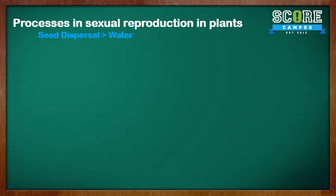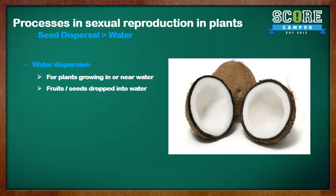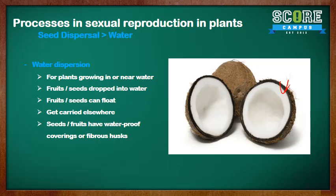Moving on to water dispersal. For plants that grow in or near water, water dispersal is a very good idea. Plants drop their fruits or seeds into the water, and these fruits and seeds can float. As you can see, this coconut can float and gets carried by the water to somewhere else. They can float because they usually have waterproof coverings or fibrous husks which help to trap air, like the coconut you see here.